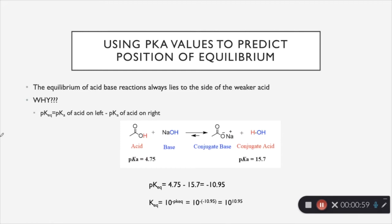So if we look at this reaction here, we see that the pKa of acetic acid is about 4.75, and the pKa of the conjugate acid, which in this case is just water, is about 15.7. So if we calculate the pKEQ, we take 4.75 minus 15.7. That equals negative 10.95.